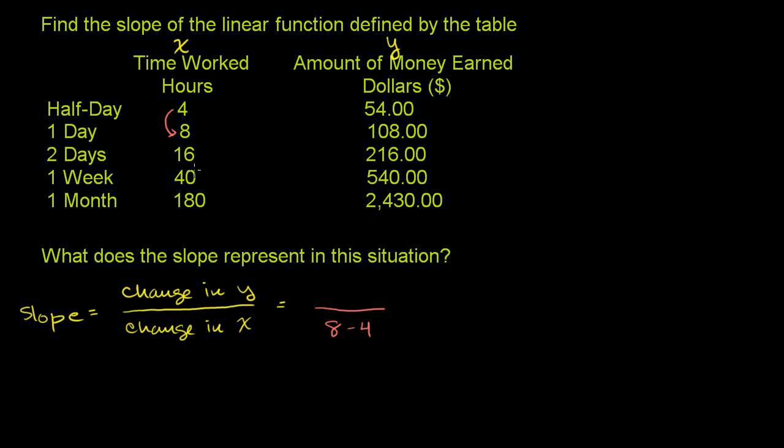But how much does the amount of money earned change if I go from 4 hours to 8 hours? Well, I go from $54 to $108. So the difference in the amount of money I make is 108 minus 54. Well, that's just 54. And then what was the change in the amount of hours I worked? Well, the change in the hours I worked was 4 hours. So if I work 4 more hours, I make 54 more dollars.